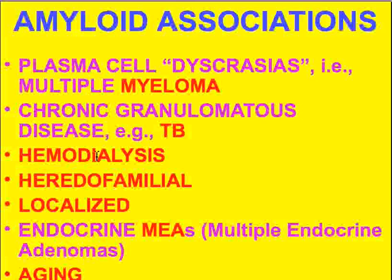Dialysis patients also get a buildup of amyloid. There are heredofamilial examples of amyloidosis, and in the pure familial type, it is most likely going to be limited to one specific organ, like the heart or liver. Multiple endocrine neoplasias are also associated with amyloid, and specifically medullary carcinoma of the thyroid — which is common in some MEAs — is characteristically loaded with amyloid.